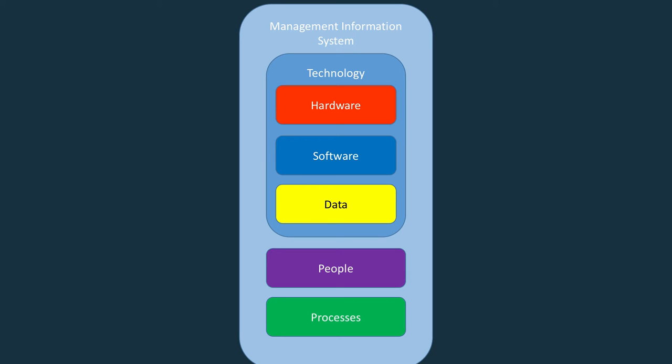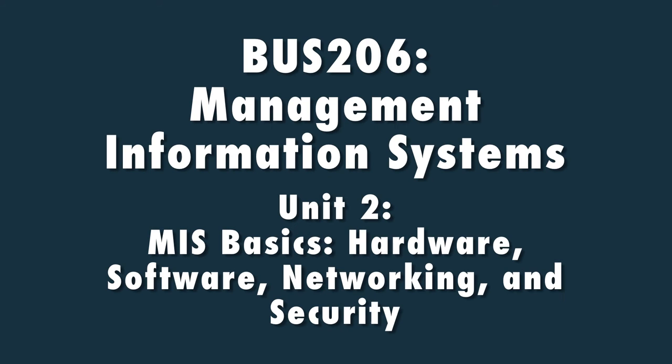The important thing to remember about Management Information Systems is that they include a combination of hardware, software, data, and networks that work together. People use these components to achieve a desired outcome or goal through processes in an organization.